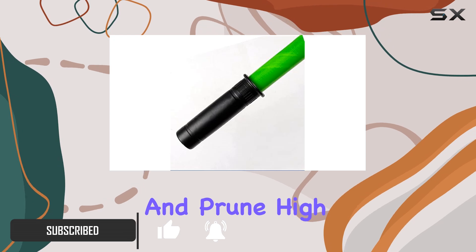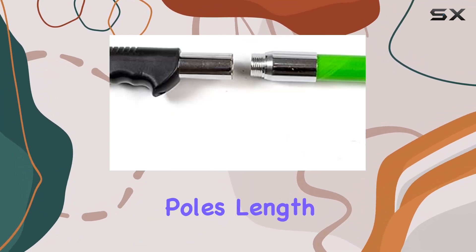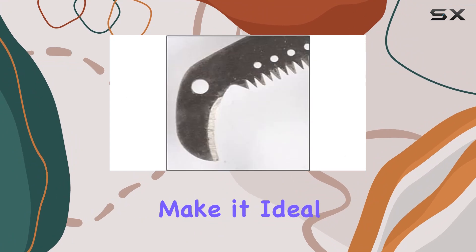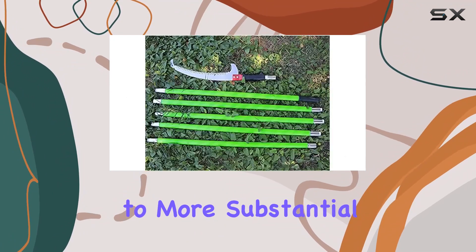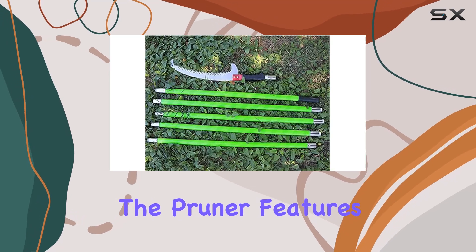The pole's length and sturdy construction make it ideal for a variety of garden tasks, from light pruning to more substantial trimming jobs. The pruner features an alloy steel blade known for its durability and sharpness.